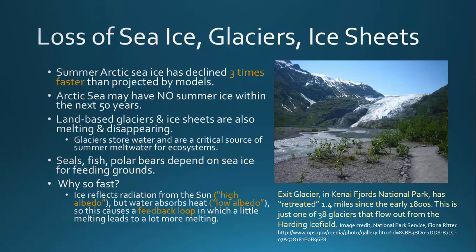Summer Arctic sea ice has declined three times faster than originally projected by models. It's predicted that within the next 50 years there will be no summer Arctic sea ice — and what does that mean for the wildlife that depend on it?